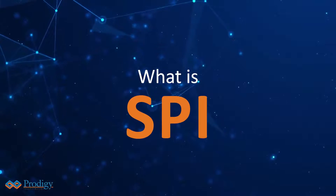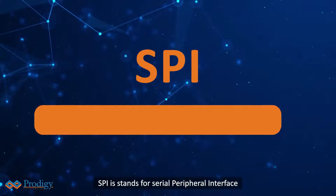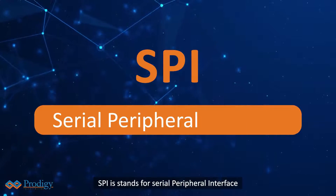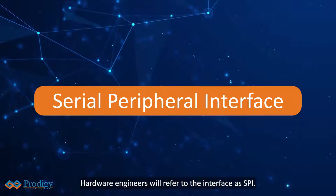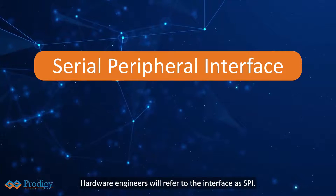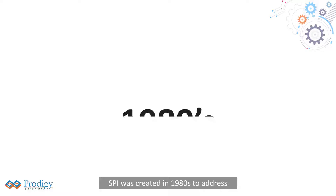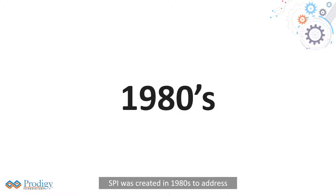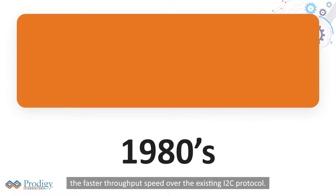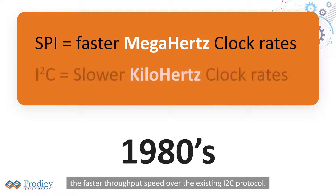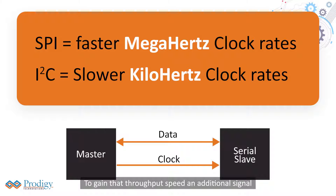What's SPI? SPI stands for Serial Peripheral Interface. Hardware engineers will refer to the interface as SPI. SPI was created in the 1980s to address faster throughput speed over the existing I2C protocol. To gain that throughput speed, an additional signal was needed to isolate data to and from the host.